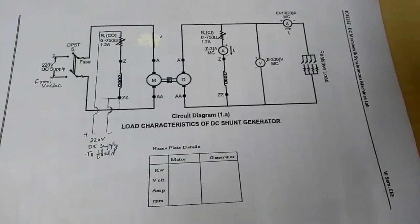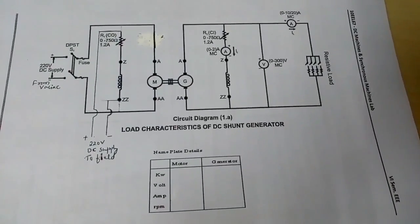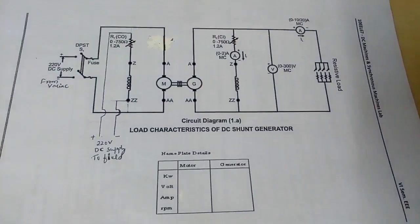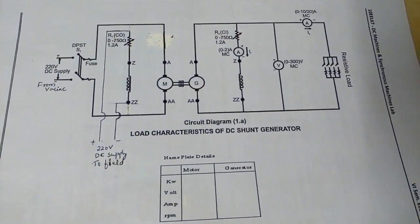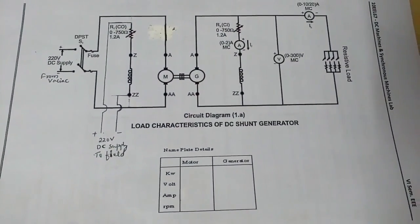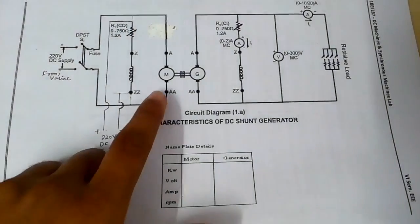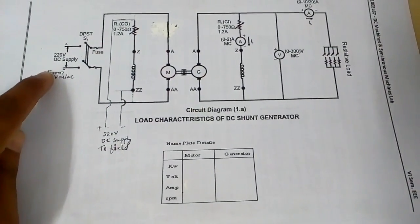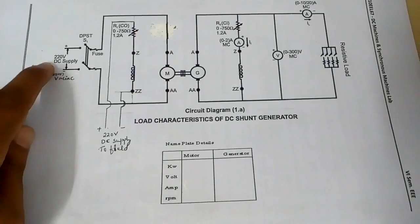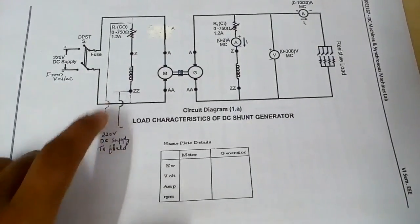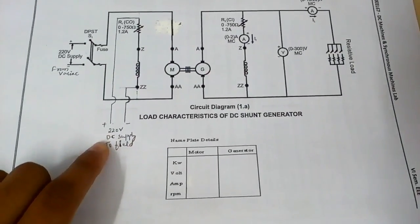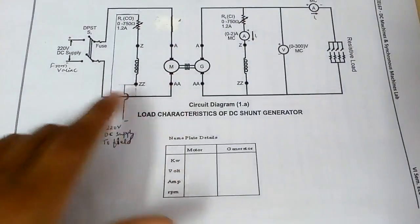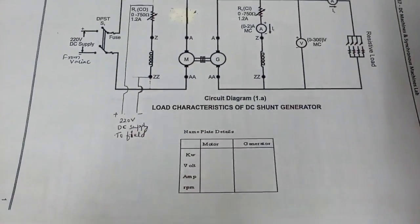Hi, this is Pradeep. We'll see the load characteristics of a DC shunt generator. This is the circuit diagram shown. First, we excite the motor through a variable DC supply of 0 to 220 volts to the armature, and for the field, a fixed 220 volts DC supply is given.